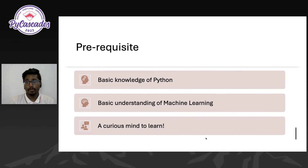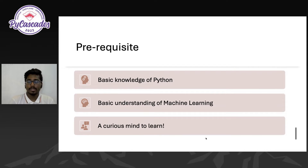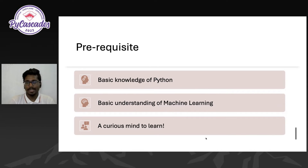Today's session is very, very beginner-friendly, so sit back and enjoy. Hopefully everyone has a very basic knowledge of Python, but if you're new to Python, it doesn't matter — all the code samples are available and you can experiment after the session. A basic understanding of machine learning would be helpful, but if you're new to it, don't worry, you can still pick up. The main prerequisite I always prefer is a curious mind to learn — with that, you can break into any technology. If you're interested, you can actually recreate or contribute to the Literature Love project by the end of today's session.